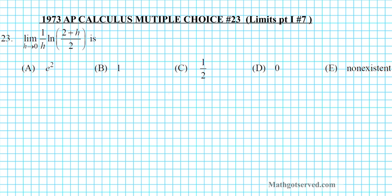For number 23, we are to find the limit as h approaches 0 of 1 over h times the natural logarithm of 2 plus h over 2.